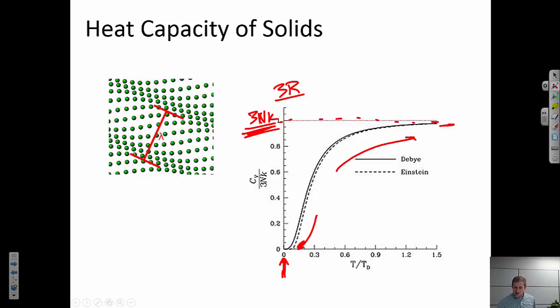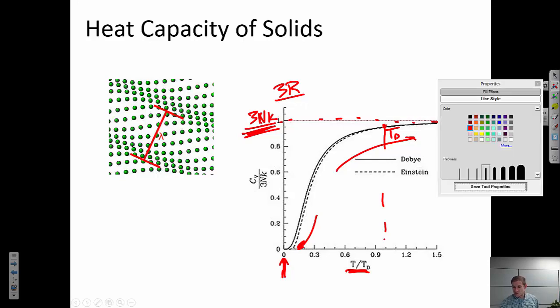So what do I mean by high temperatures? Well, each material has a different what we call the Debye temperature. The Debye temperature is a temperature, it's right about here, given on one because I've normalized this axis here. But the Debye temperature is the temperature at which I'm able to access most of these vibrational modes. So by the time I get to the Debye temperature, the heat capacity is almost constant for all these different materials.